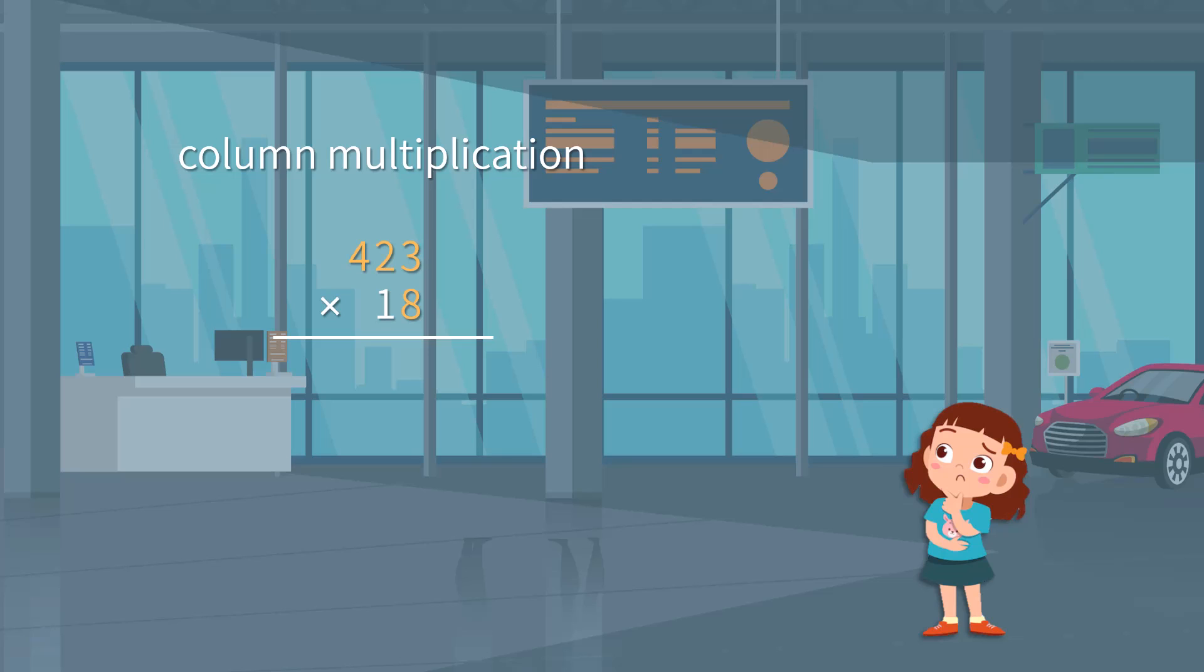We then do multiplication with each digit in 4, 2, 3 with 8 first. This follows the way to find a one-digit multiplication product, which gives 3,384. Then, what shall we do next?